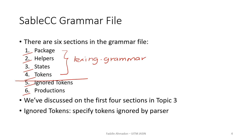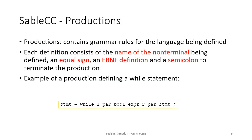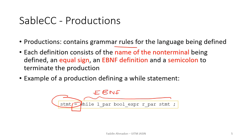Ignored tokens, just like its name implies, are simply tokens that we want the parser to ignore. Productions is the most important part of the grammar file — it contains the grammar rules for the language being defined. Each definition consists of the name of the non-terminal being defined, an equal sign, an extended BNF definition, and a semicolon to terminate the production.